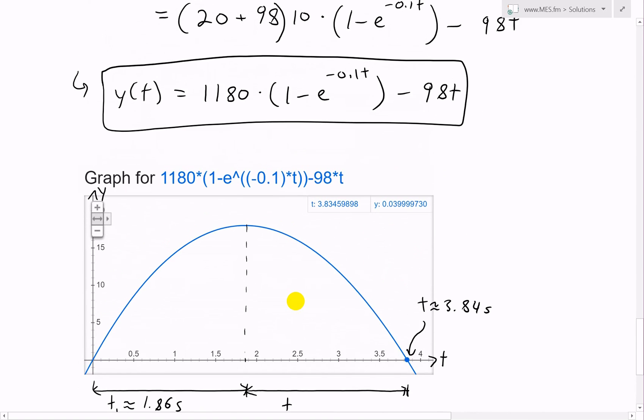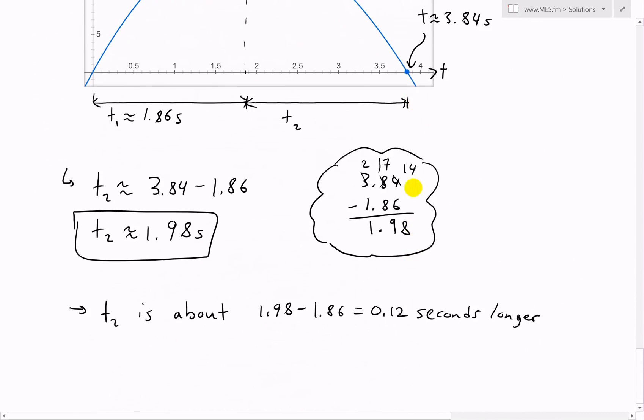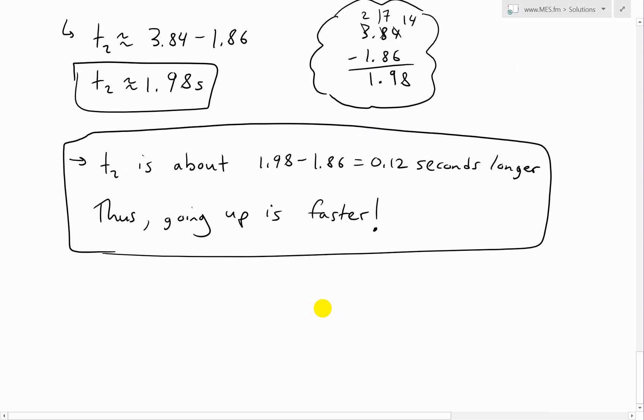Thus, answering the question which is faster going up or coming down. Thus, going up is faster, which is different from what I initially guessed in my very first video on the Applied Project. I thought it was going to be the exact same, which is quite surprising.